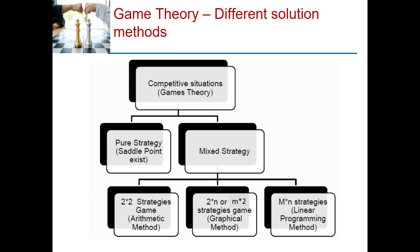Next, we will discuss different solution methods of game theory. There are two different strategies: pure strategy and mixed strategy. If the game has a saddle point, then it is a pure strategy problem. If not, it is a mixed strategy problem. We have different methods for different sizes of the game. If we have a 2×2 matrix, then arithmetic method or algebraic method can be used. If we have a 2×n matrix or m×2 matrix, then graphical method is used.